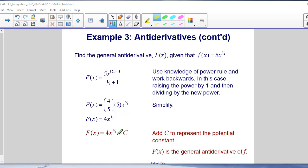Our last and final step would be to include the constant C. We add C to represent a potential constant. Capital F of X is known as the general antiderivative of f.